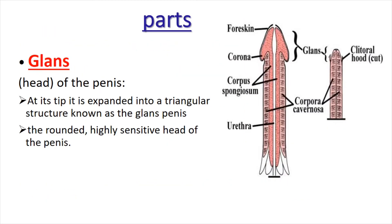Now we are moving to the glans. The glans is the head of the penis — it is rounded in shape. Its tip is expanded into a triangular structure known as the glans penis. It is rounded and highly sensitive because nerve supplies are more concentrated in the glans.